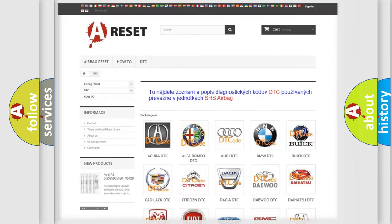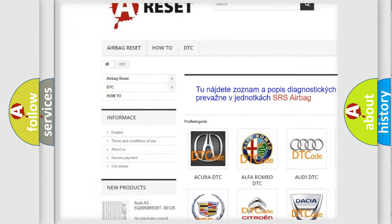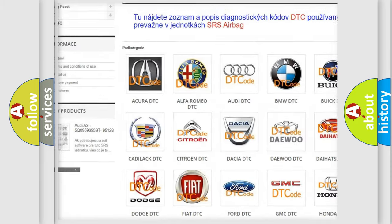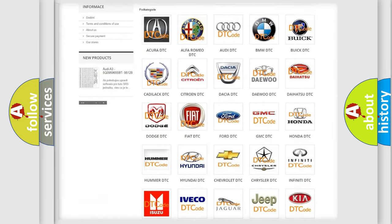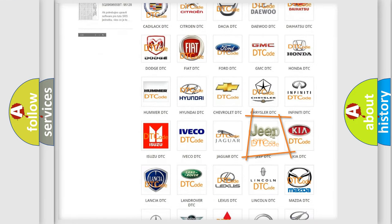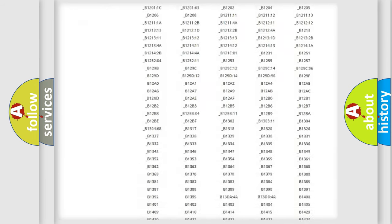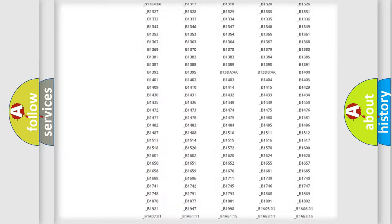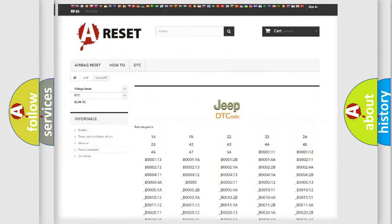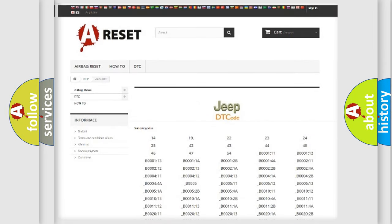Our website airbagreset.sk produces useful videos for you. You do not have to go through the OBD2 protocol anymore to know how to troubleshoot any car breakdown. You will find all the diagnostic codes that can be diagnosed in Jeep vehicles, and many other useful things.